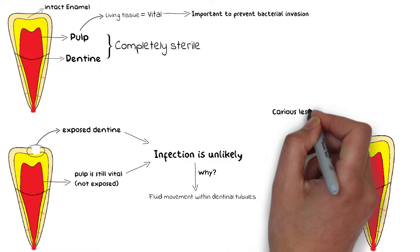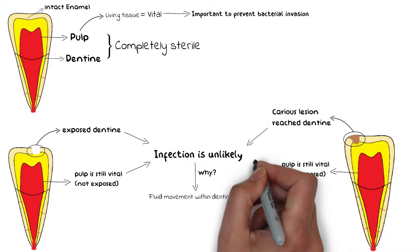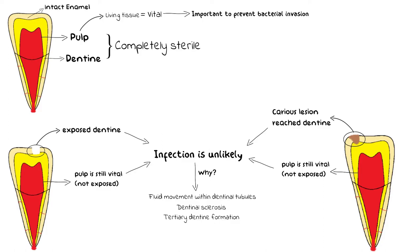Even when there is a caries lesion on the dentine and the pulp is still vital, other factors such as dentinal sclerosis beneath the lesion, tertiary dentine formation in response to the caries lesion, and accumulation of antibodies resulting in pulpal inflammation — all of these factors limit and impede bacterial invasion to the pulp via tubules. So even if a tooth is carious, bacterial invasion to the pulp and pulpal necrosis takes a very long time to develop.